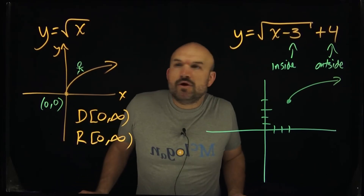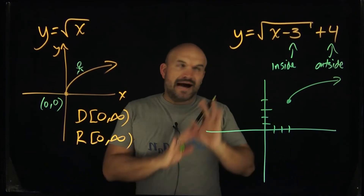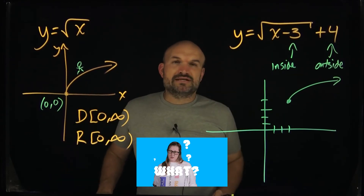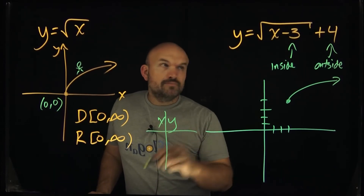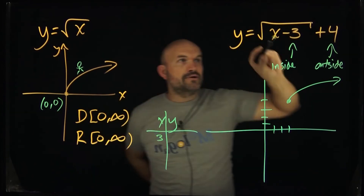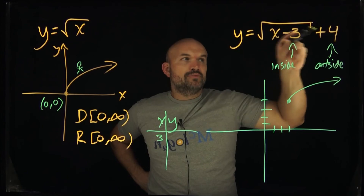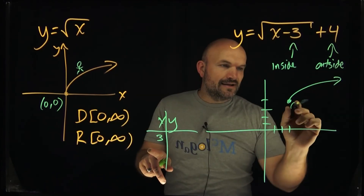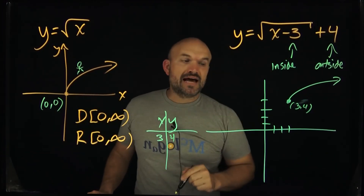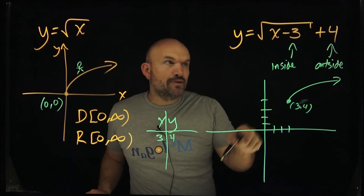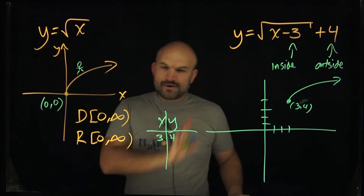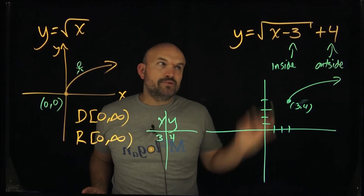A lot of students ask: shouldn't it shift to the left since it's negative? Here's a quick way to verify on a test or quiz — plug in a value. Pick the value that makes the radicand zero, which is x = 3. Plugging in: 3 minus 3 is 0, square root of 0 is 0, plus 4 is 4. So the point is (3, 4), confirming the shift is three units to the right, not left. If it were shifted left, you'd get the point (−3, 4), but plugging in −3 gives you a negative under the radical, which isn't real — so that confirms the direction is correct.